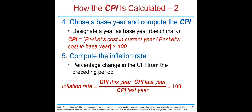Step four: BLS chooses a base year and computes the CPI. The base year is the benchmark year. CPI equals the cost of the basket in the current year divided by the cost of the basket in the base year, times 100. CPI represents the average price of this basket.